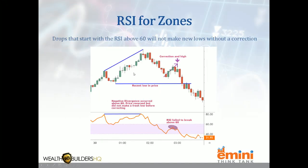Looking at the other direction — if you're moving up, you can see we actually had divergence. Prices were making new highs, but the indicator was not. That's a negative divergence, and the divergence occurred above 60. That means we should drop, but the move down will not take out prior lows without a correction. Sure enough, there's your move down — couldn't get below the previous low. We had a correction, but on the correction we failed to get above 60, so prices made fresh lows.